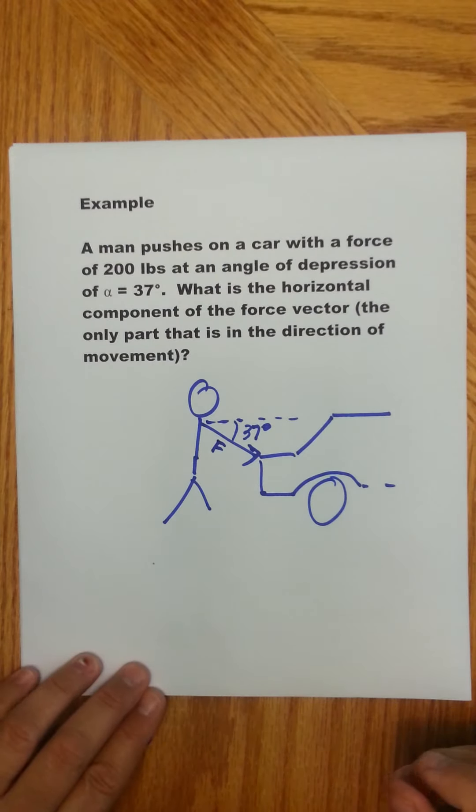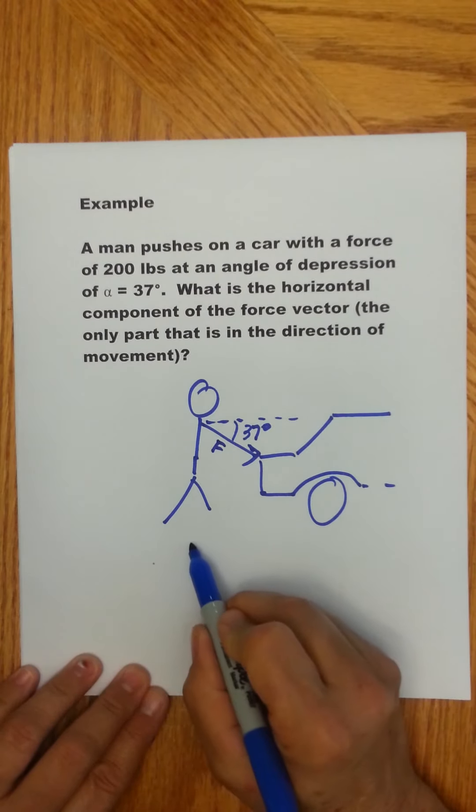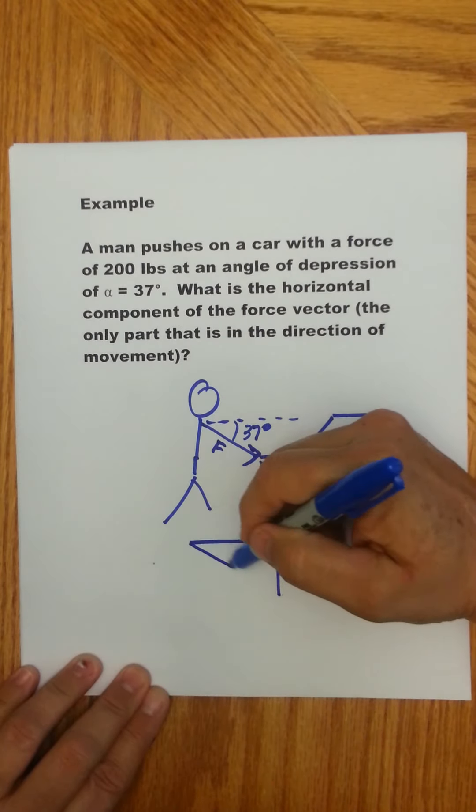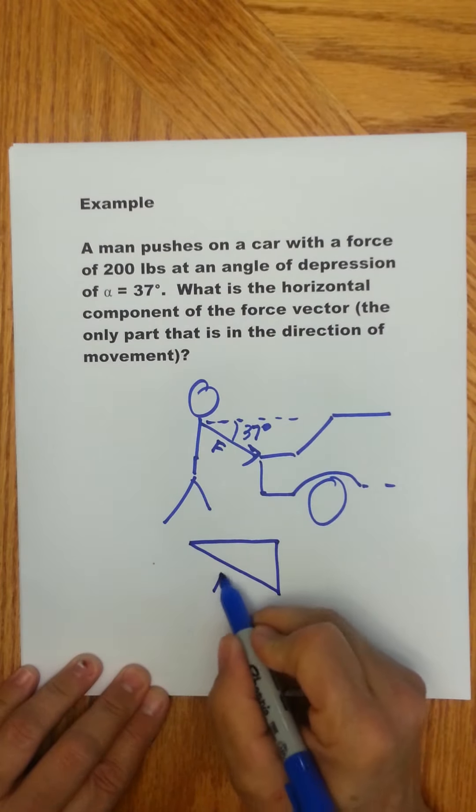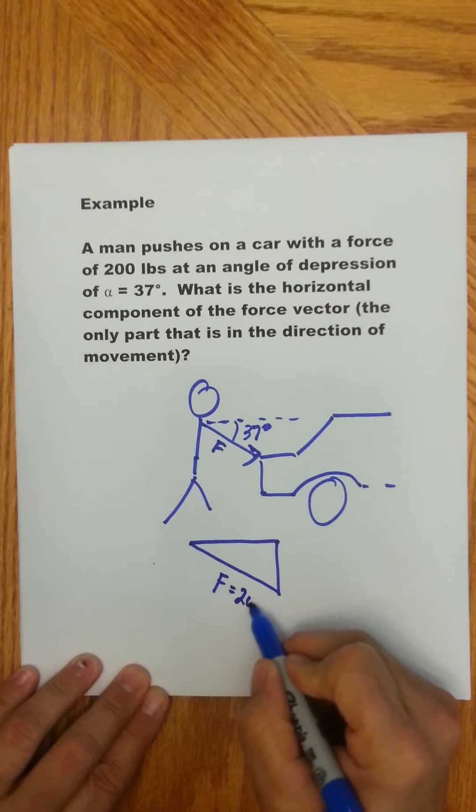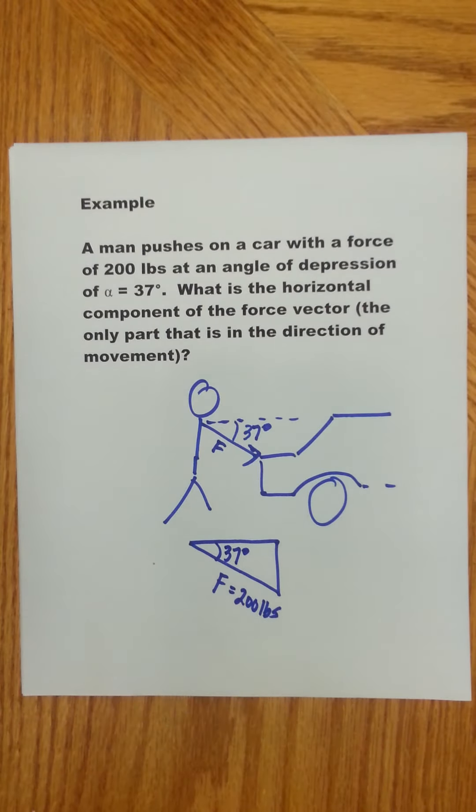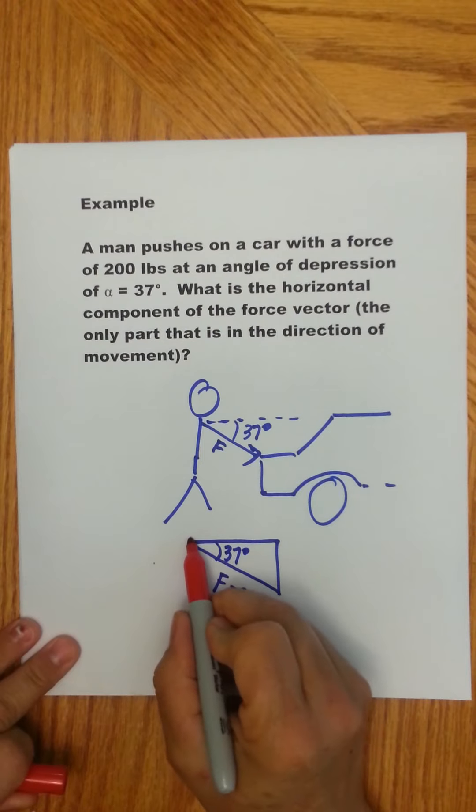Essentially, what we have is a right triangle like this. This is the force, which we know is 200 lbs. We have an angle here of 37 degrees, and we want to know the horizontal component, which is this part right here.